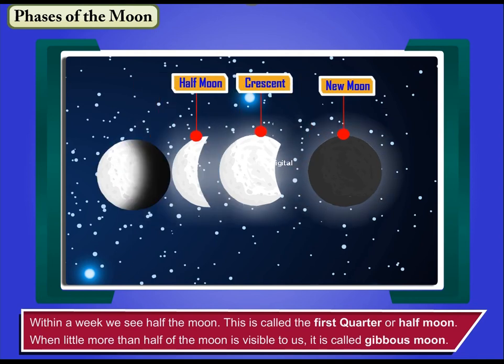When little more than half of the Moon is visible to us, it is called Gibbous Moon.